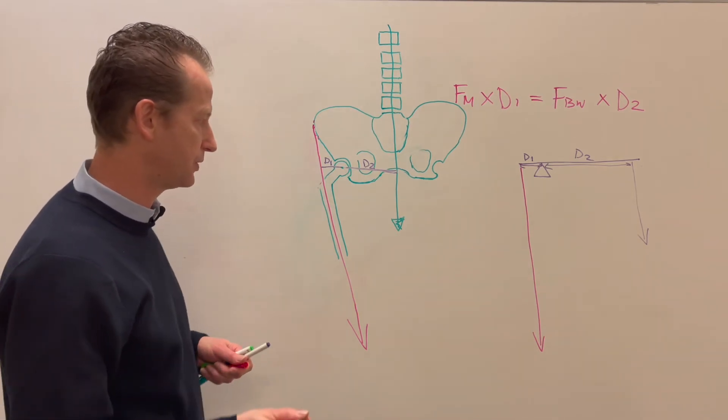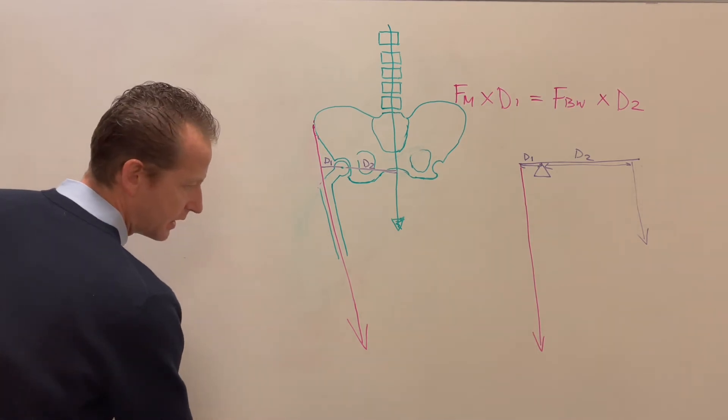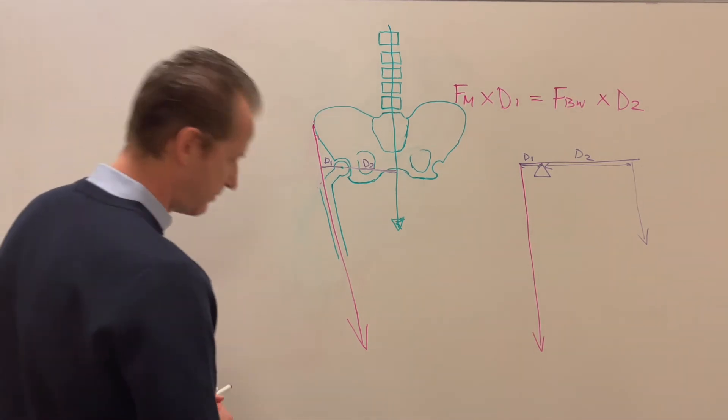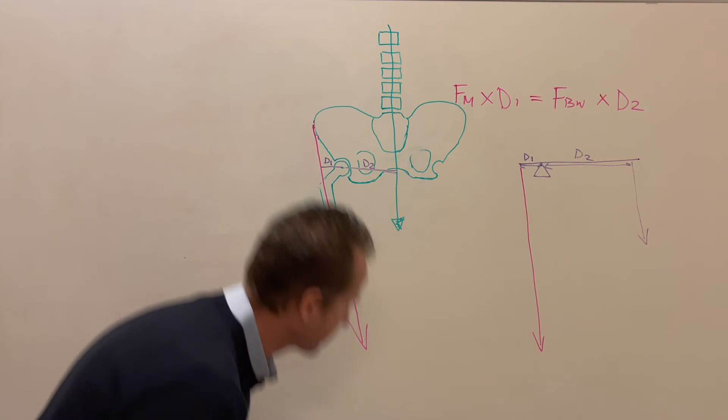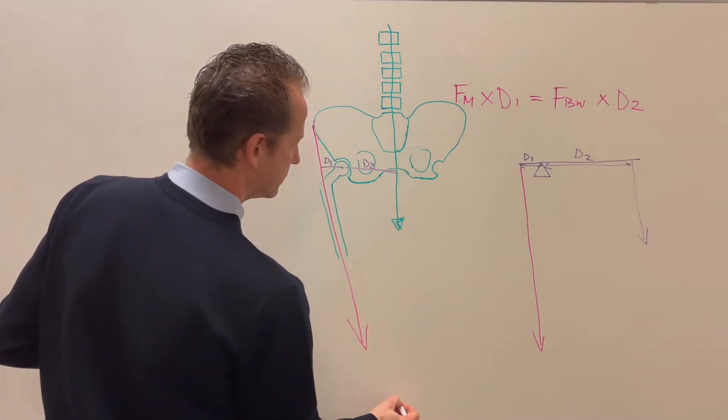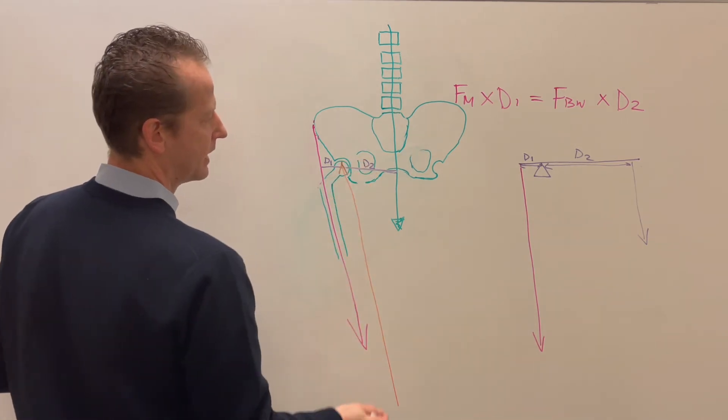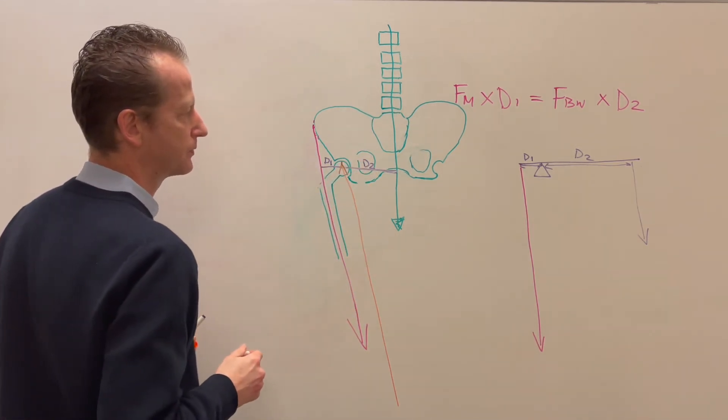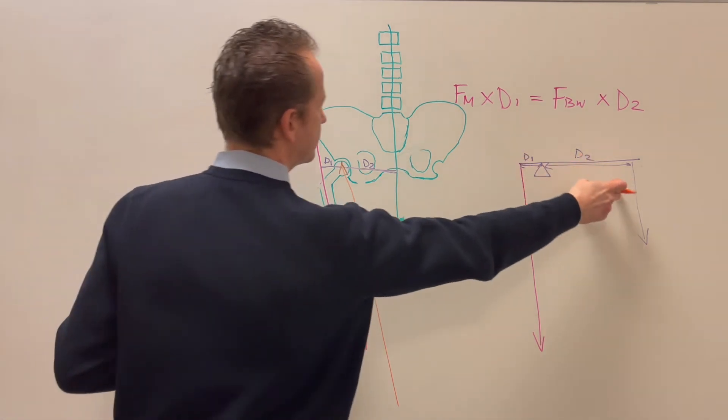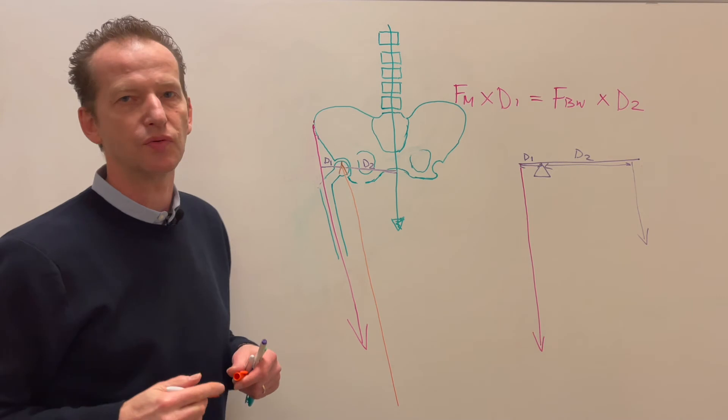So the joint reaction force then will be the force that goes in the opposite direction. It will be the force applied to this joint in upward direction. So you have these two forces and then you will have joint reaction force that needs to equalize them.